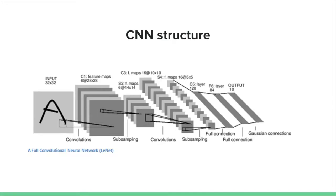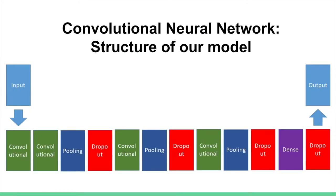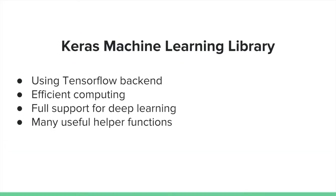A CNN is built of many different layers together. For our model, an input image goes through several convolutional layers, pooling layers, and dropout layers, and in the end it goes through a dense layer and eventually outputs 10 numbers indicating which driver behavior is most likely. We used the powerful Keras machine learning library to build our model. Keras can use the popular TensorFlow library as its backend, which is efficient in computing and has great support for deep learning.